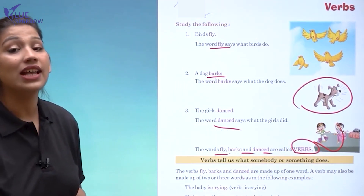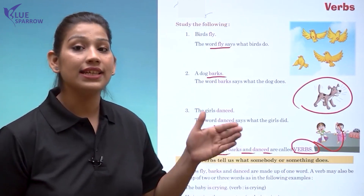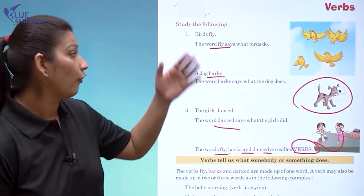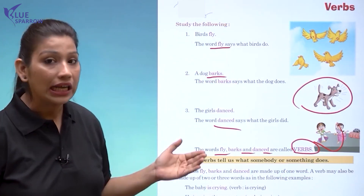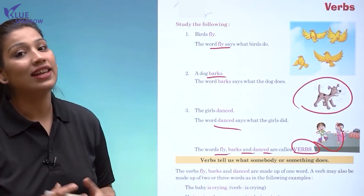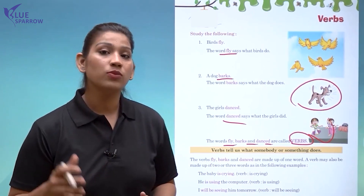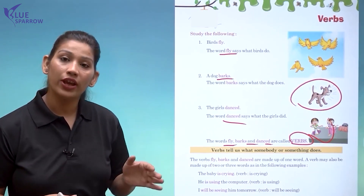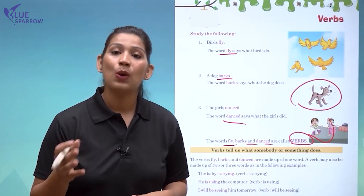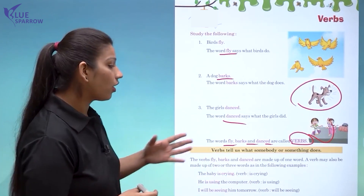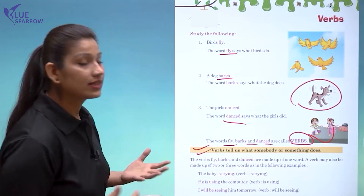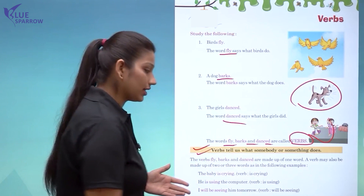These are called verbs because they tell us the action. Flying is an action, barking is an action, and dancing is also an action. Any work that we perform is called an action word, and action words are called verbs. Verbs tell us what somebody or something does.